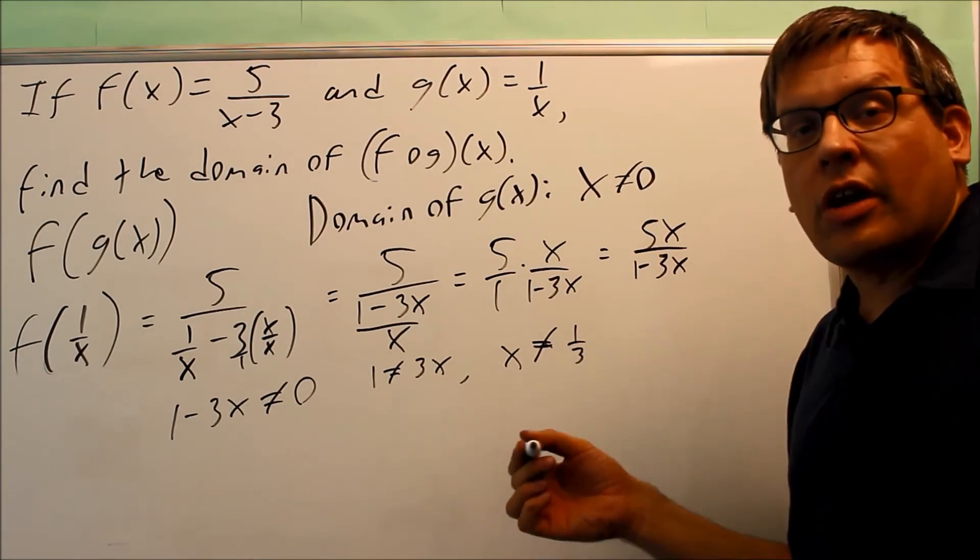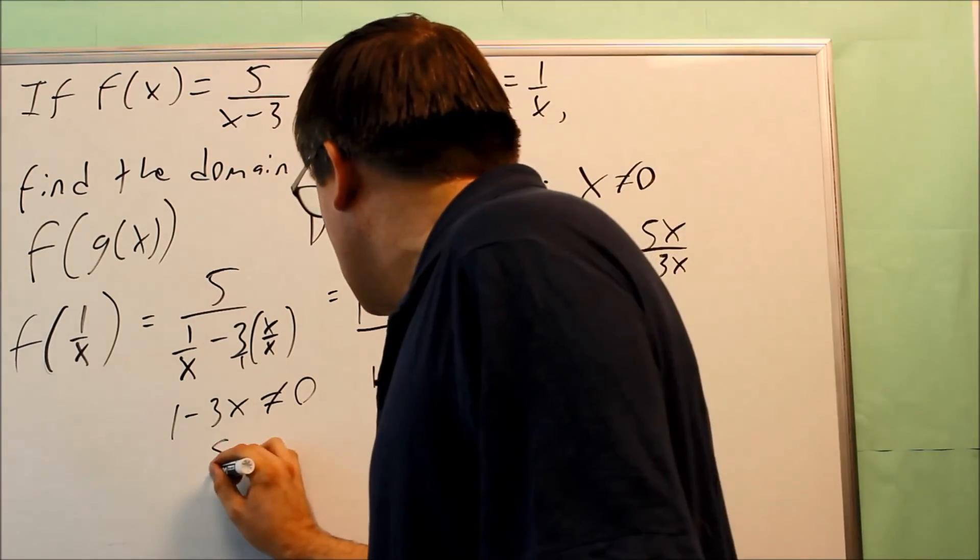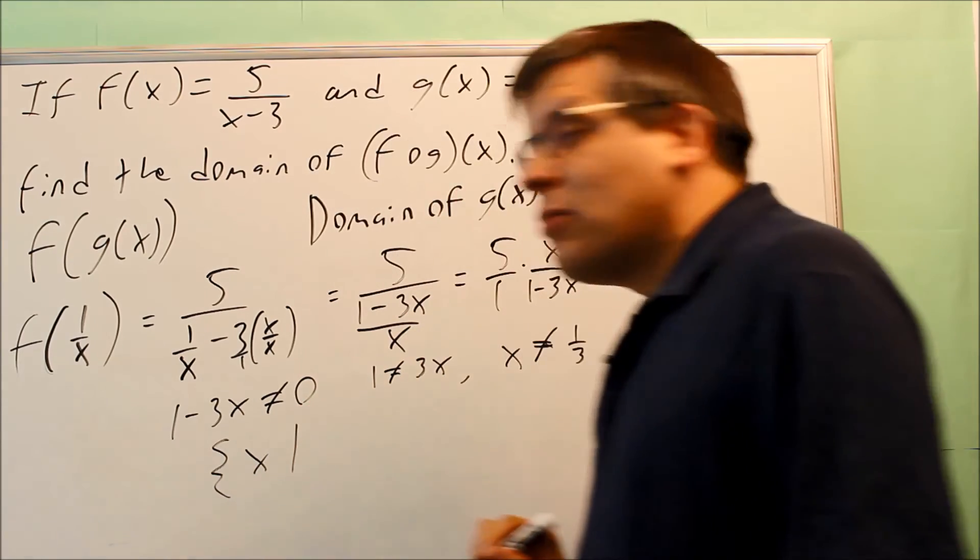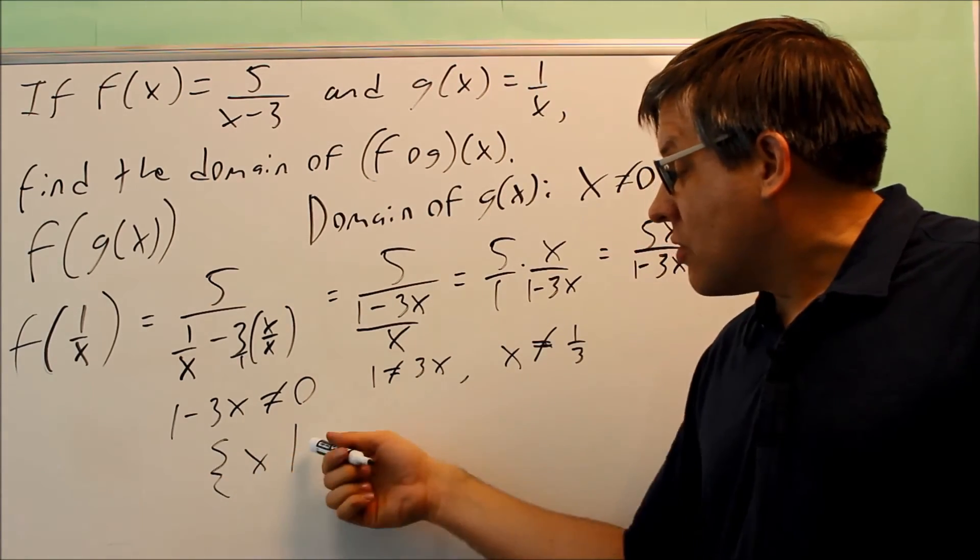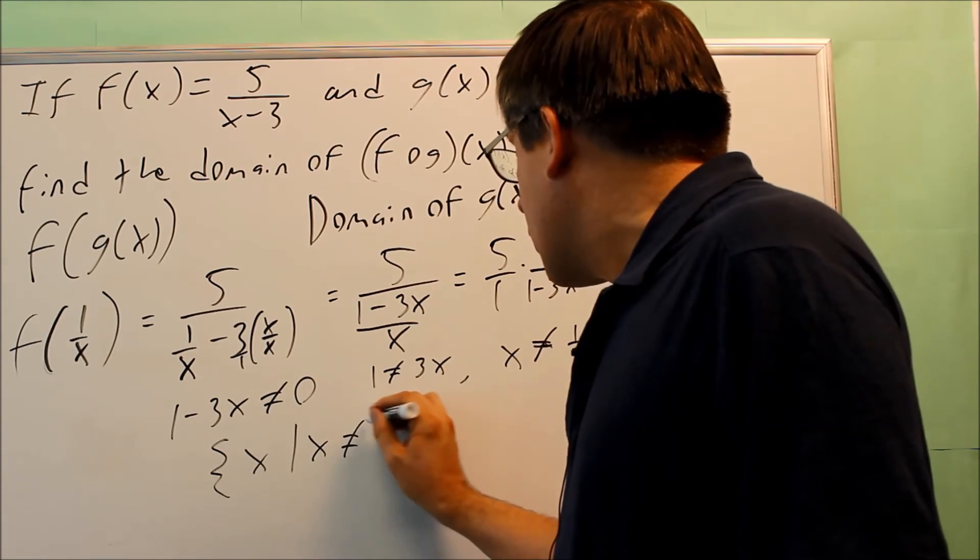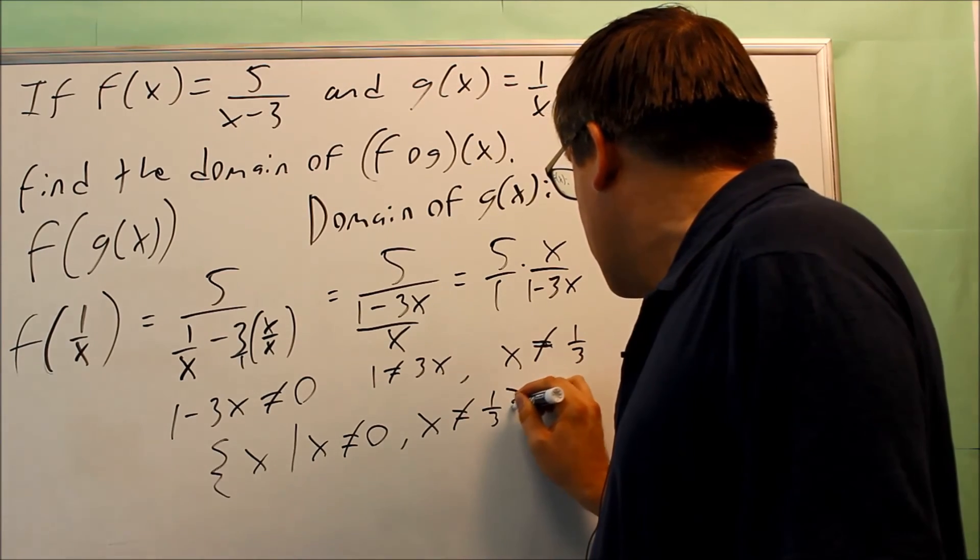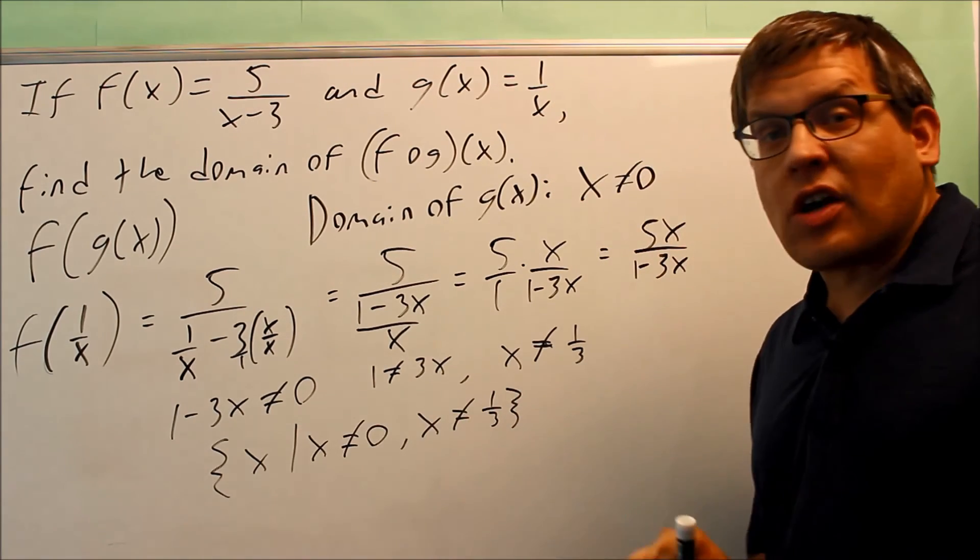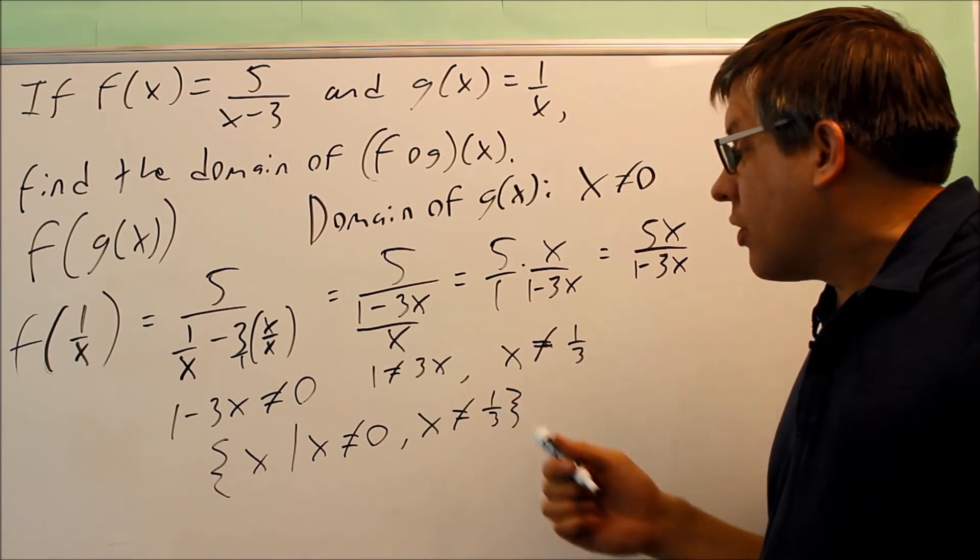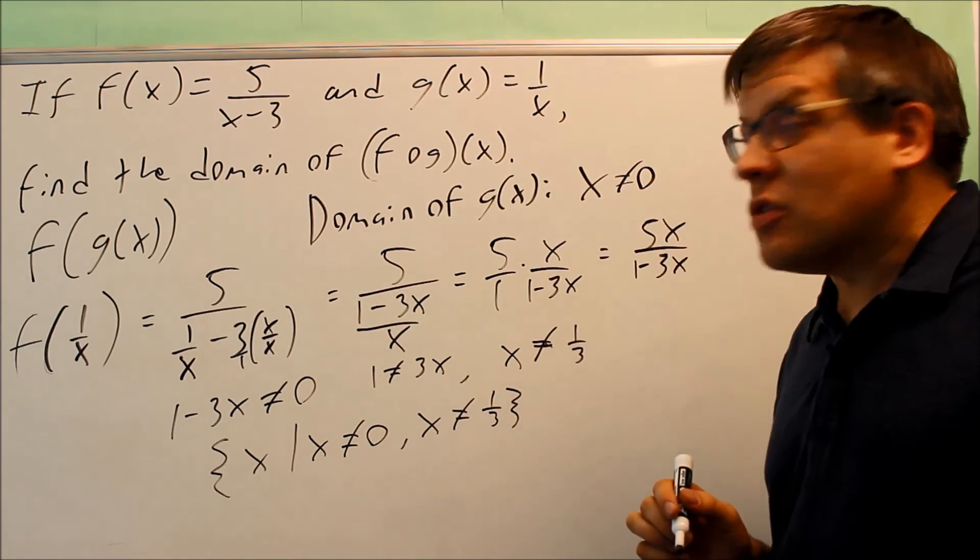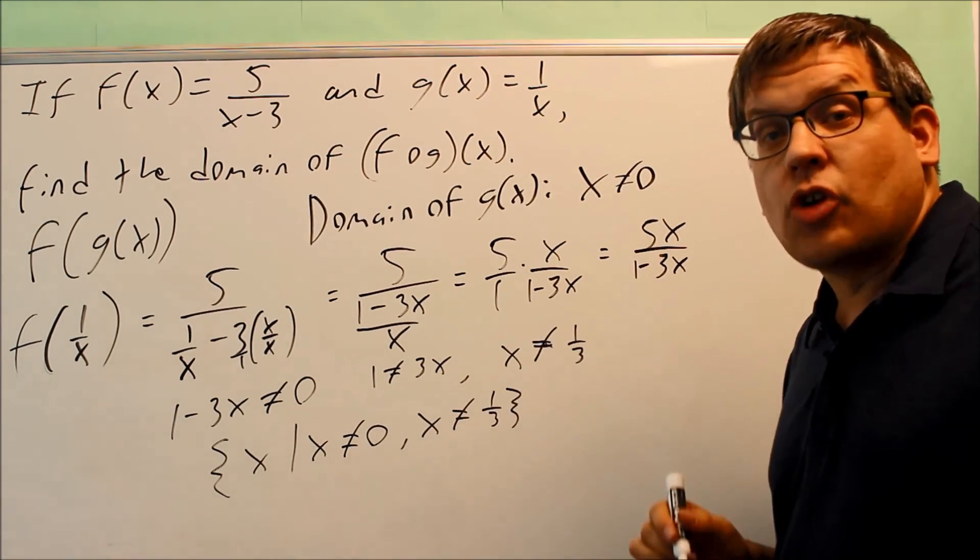So usually you're going to write your answer either in set builder notation or interval. For problems like this, usually it asks for set builder notation. This is saying the set of all values of x such that x is not equal to 0 and x is not equal to 1 third. So it's saying that all values of x are okay except for 0 and 1 third. Because if I put 0 and 1 third, I cause denominators to be 0, and those numbers, undefined numbers, are not allowed to be included in our domain.